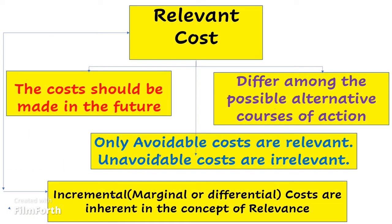Let's talk about relevant cost. There are four points to keep in mind when deciding whether a cost is relevant or irrelevant. First, the cost should be incurred in the future. Second, it should differ among the possible alternative courses of action. For example, if you plan to start an extra unit in your factory, you may or may not start it. If you do, there will be extra expenditure; if you don't, there won't. That cost differs between alternatives, so it's a relevant cost.